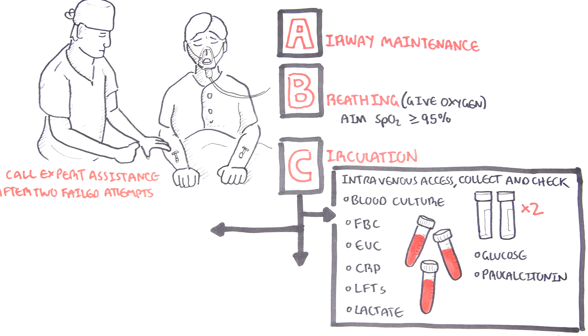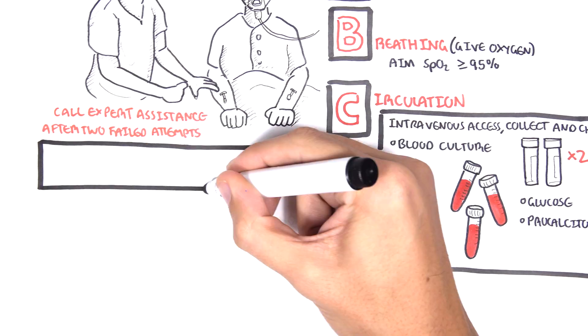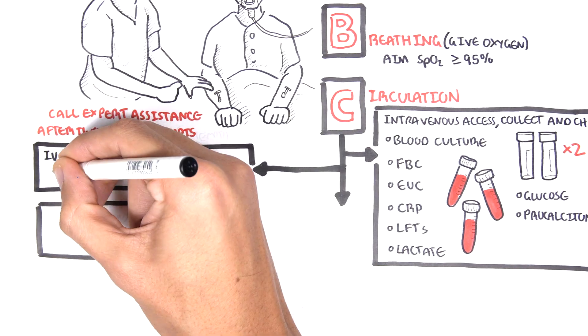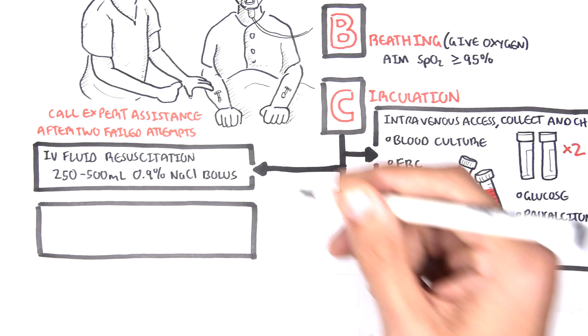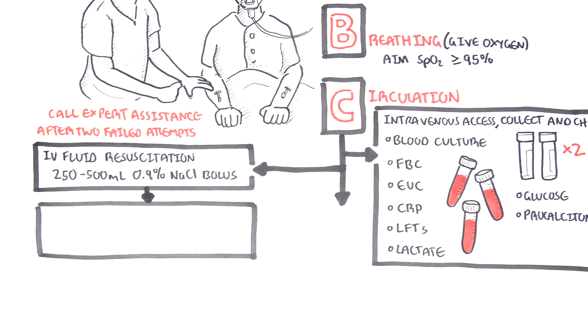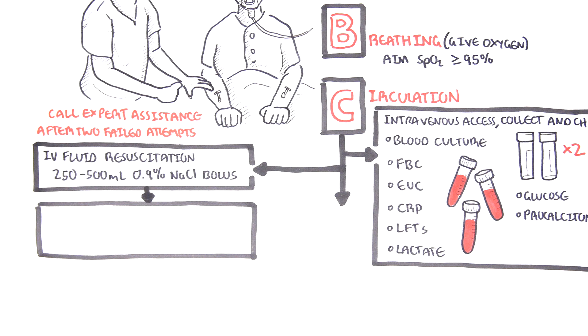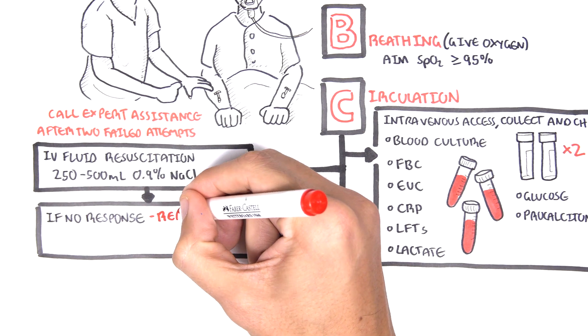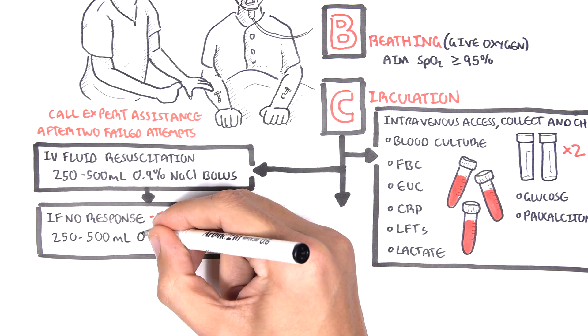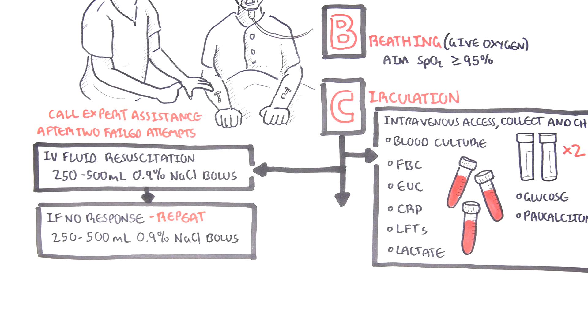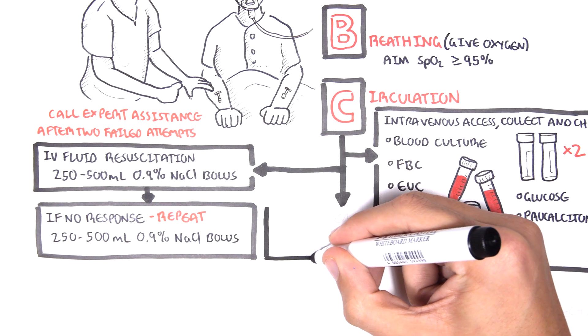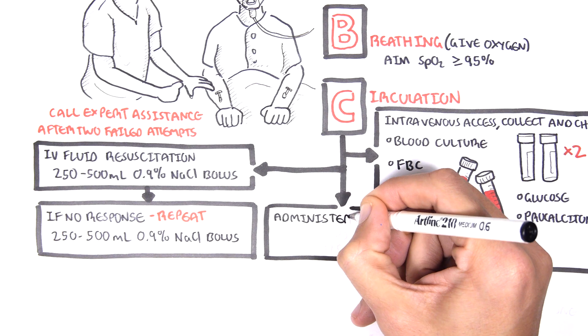The second part of circulation is to give IV fluids for resuscitation in case of septic shock. This is between 250 to 500 milliliters of 0.9% sodium chloride bolus. If there is no response after that first dose, give another 250 to 500 milliliters of 0.9% sodium chloride again. Keep note that these values may change and different hospitals may have different dosages. This dose is for adults specifically. The third part of circulation is the administration of empirical antibiotics, done intravenously.